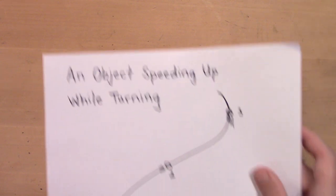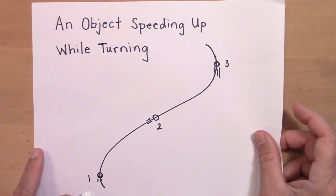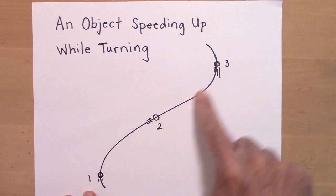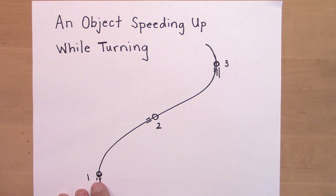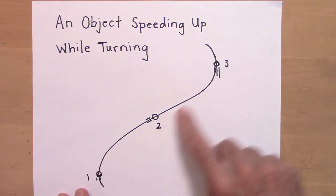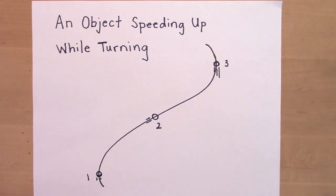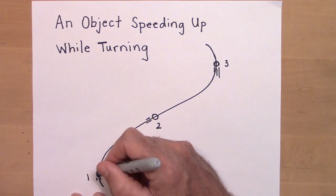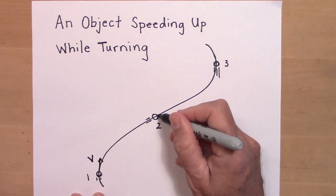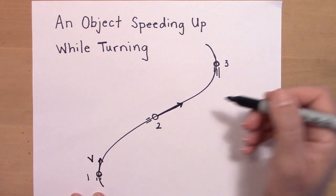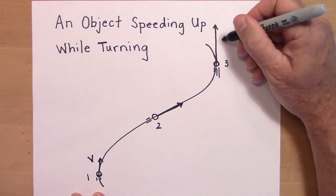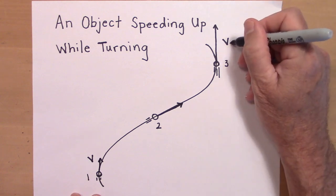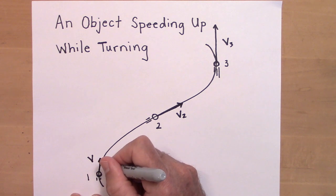But how do you handle an object that's going around a circle or through a curve and it's speeding up? Let's say an object's going along this path, and there are three spots: spot one, spot two, and spot three. If it's speeding up as it goes, then it must have a tangential acceleration. The tangential acceleration is tangent to the velocity — in other words, it's in the same direction as the velocity. So V1 is smallest, V2 is bigger because it's speeding up, and V3 is the biggest.